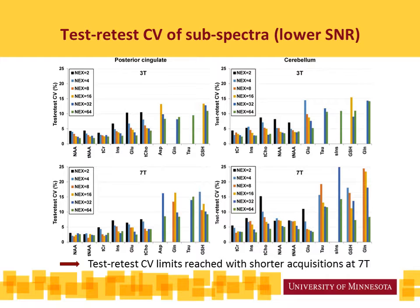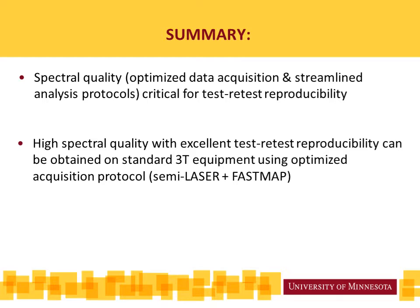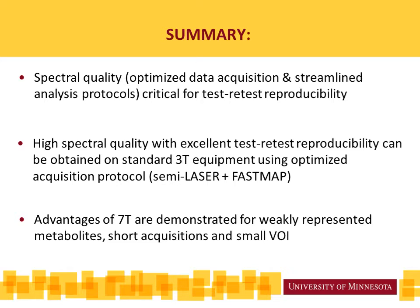We can conclude that test-retest CV limits were reached with shorter acquisitions at 7 tesla at lower SNR. To summarize: spectral quality through optimized data acquisition methods and streamlined analysis protocols are critical for test-retest reproducibility. High spectral quality with excellent test-retest reproducibility can be obtained on standard 3 tesla equipment using an optimized acquisition protocol — in our case combining semi-LASER with FASTMAP shimming. Finally, we demonstrated advantages of 7 tesla in particular for weakly represented metabolites, short acquisitions, and small volumes of interest. Thank you.